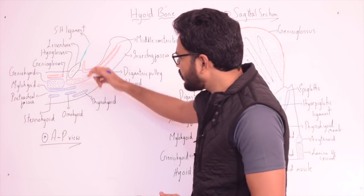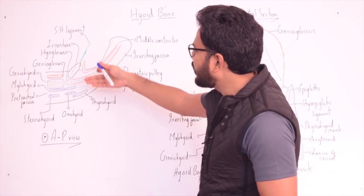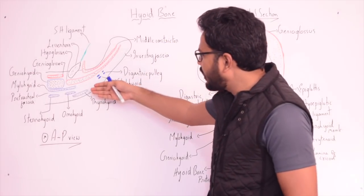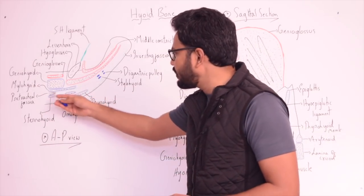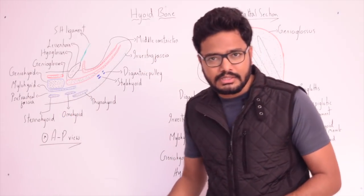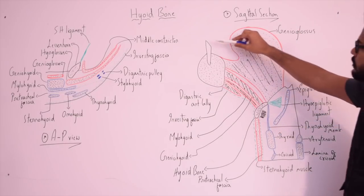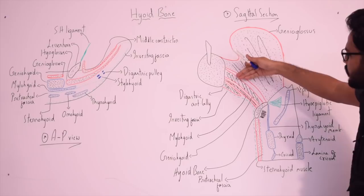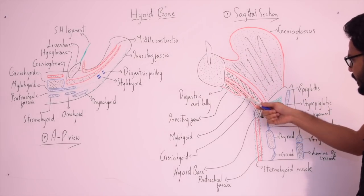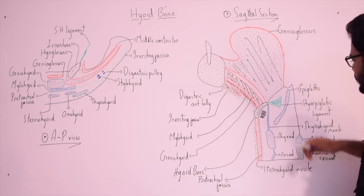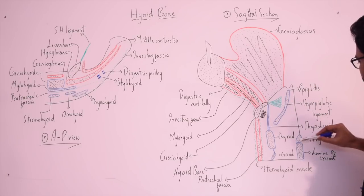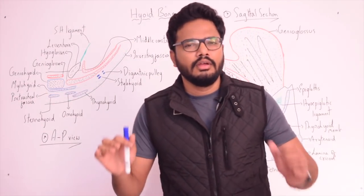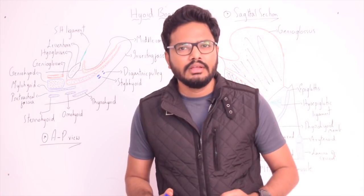Looking at the various muscle attachments visible in the illustrations: geniohyoid, mylohyoid, genioglossus, hyoglossus, middle constrictor, stylohyoid, digastric pulley, thyrohyoid, sternohyoid, and omohyoid. There are also fascial attachments including the pretracheal fascia and the investing layer of deep fascia. The sagittal view shows the tooth, alveolar part, hyoid bone, and muscular attachments including genioglossus, geniohyoid, mylohyoid, digastric anterior belly, sternohyoid, thyroid cartilage, epiglottis, and arytenoid cartilage.